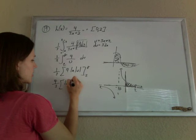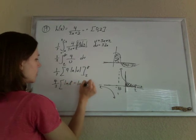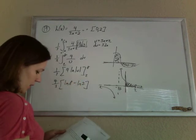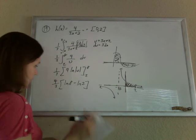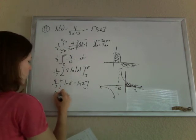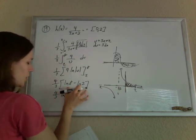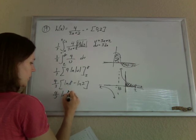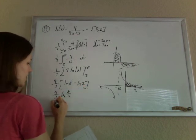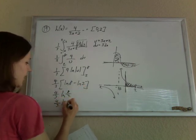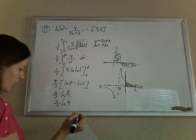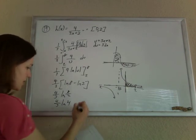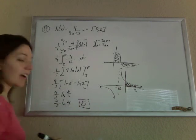So 4 thirds ln 8 minus ln 2. Let's see if they combine these. They do. So we know if we are subtracting logs as a single log, you can divide. So that's ln of 8 divided by 2. So that's the ln of 4. And we see that answer as d. And that's our guide.